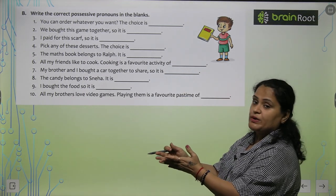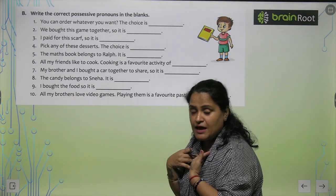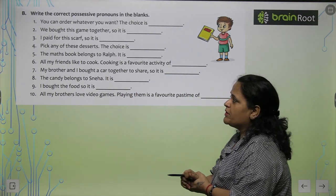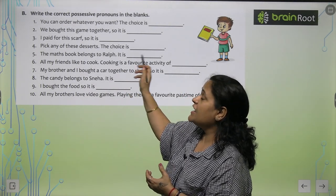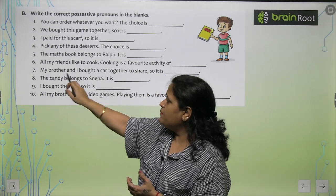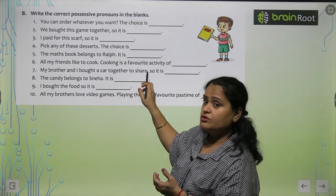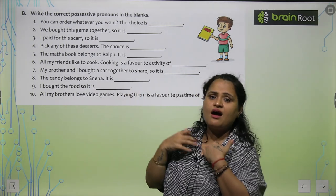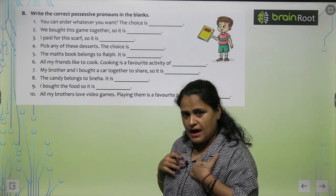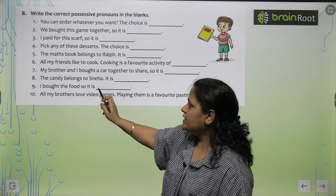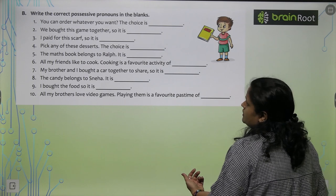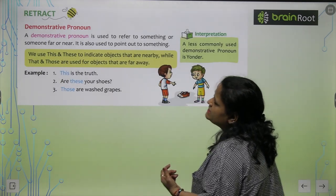Fifth one: 'The maths book belongs to Ralf. It is his.' 'My brother and I bought a car together to share, so it is ours' — O-U-R-S, ours. So I hope personal and possessive pronouns are clear to you now.